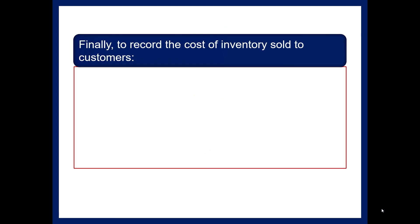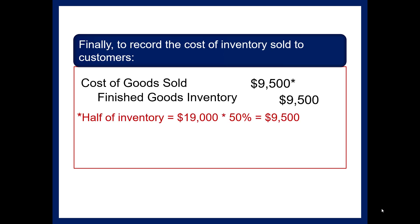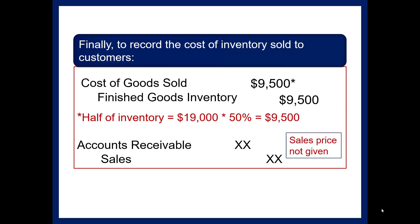When inventory is sold to customers, there is no difference from what you've seen before. We increase Cost of Goods Sold and decrease Finished Goods Inventory — in this case for $9,500, since half of the $19,000 inventory was sold. We would also record the sale by increasing Accounts Receivable and increasing Sales, though the sales price was not given here.